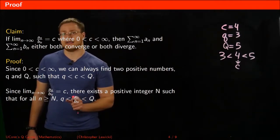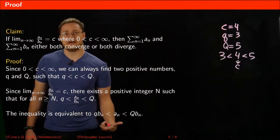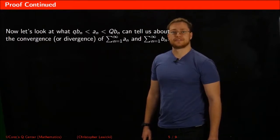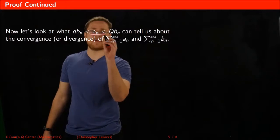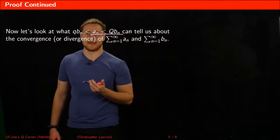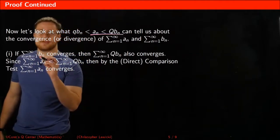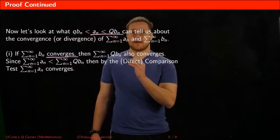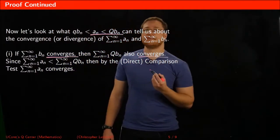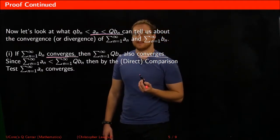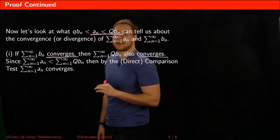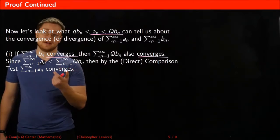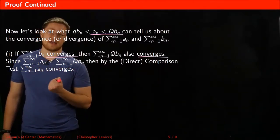Multiplying that inequality by bₙ gives us a new result. Looking at the part of the inequality that says aₙ is strictly less than capital Q times bₙ: if we assume the series bₙ converges, then the series capital Q times bₙ also converges, because capital Q is just a constant and multiplying a series by a constant does not change its convergence or divergence. By the comparison test, if the greater of two series converges, the smaller also has to converge.